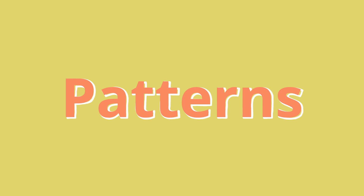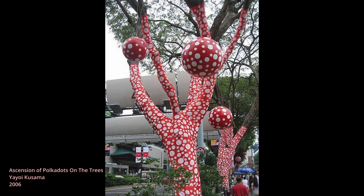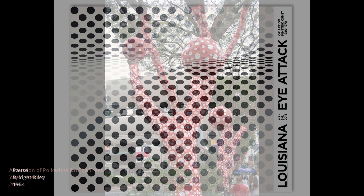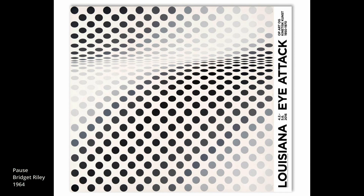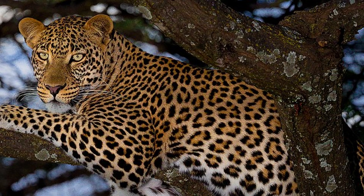What is a pattern? Well, a pattern is a repeated decorative design. Throughout history, many artists have used patterns to create visual interest and to decorate different objects in their drawing or their sculpture. Some examples of patterns are polka dots like you see here, stripes, or even complicated symbols like text.